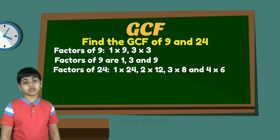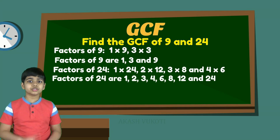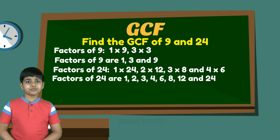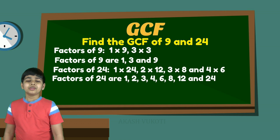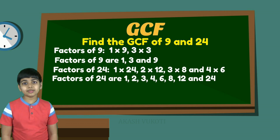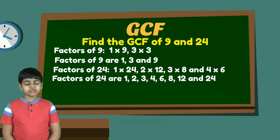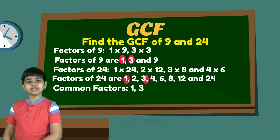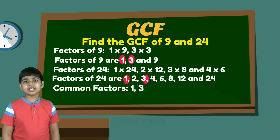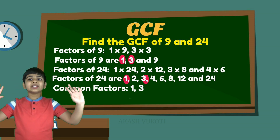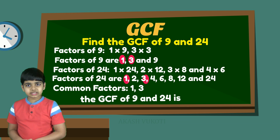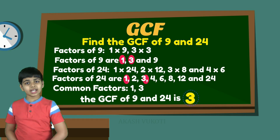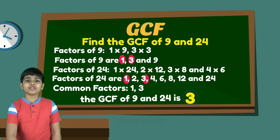So, the factors of 24 are 1, 2, 3, 4, 6, 8, 12, and 24. Now, we need to find the common factors of 9 and 24, which are 1 and 3. Now, in order to find the GCF, we need to find the greatest of these two numbers, which is 3. So, the GCF of 9 and 24 is just 3.